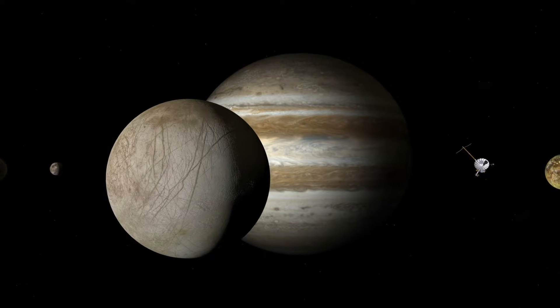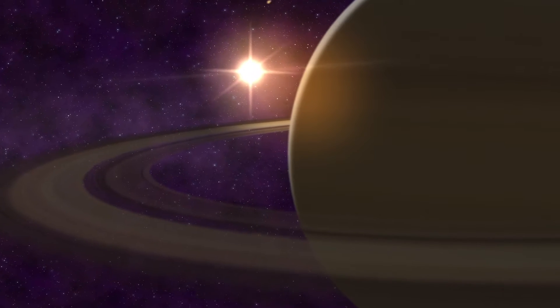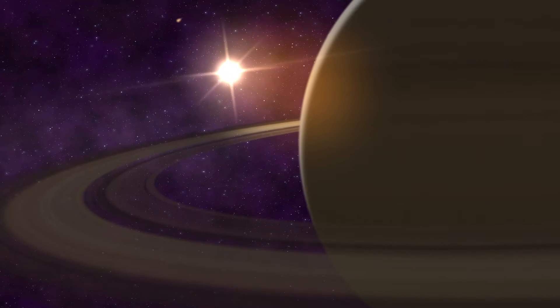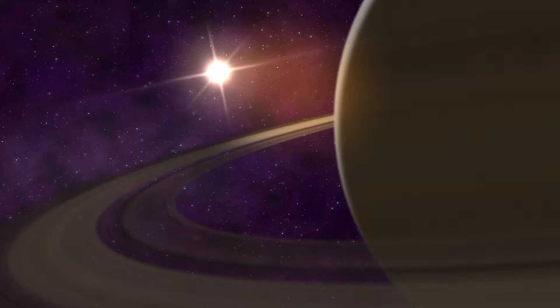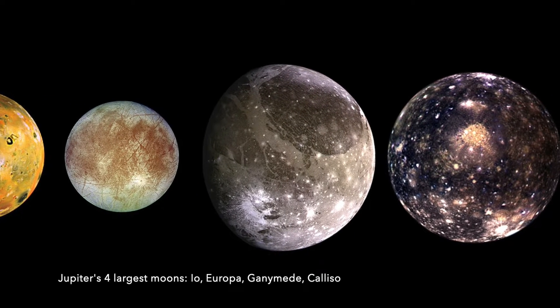Also on our list are three of Jupiter and Saturn's combined total of 125 ice moons. What are ice moons? They are, strange as it may sound, moons made mostly of ice.